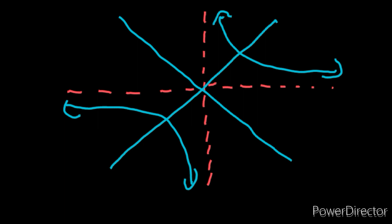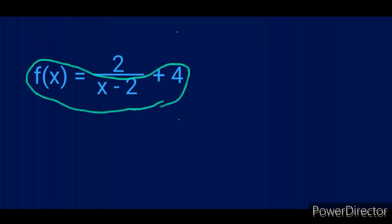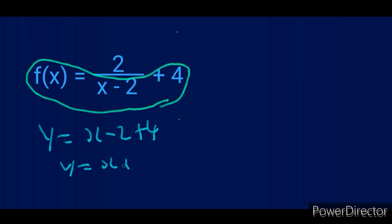Let's begin with how to find the equations of the axes of symmetry. There are three methods, but the easiest method is where you take everything except the numerator. So f(x) is the same as y, and we say y equals x - 2 + 4, and -2 + 4 is 2, so y equals x + 2. This is the first equation of the axis of symmetry.